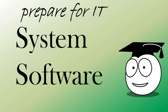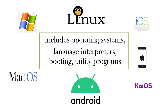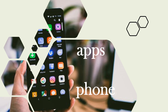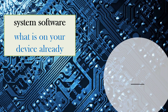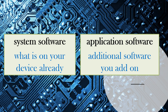Let's have a look at system software, which includes operating systems, the language interpreter, booting system, and utility programs. You probably have a phone and understand what apps are. The phone is hardware and apps is short for application software. There's a layer in between the hardware and the apps — that's called system software. When you get your device you've already got software on there; that's the system software. The apps that you add on is application software.